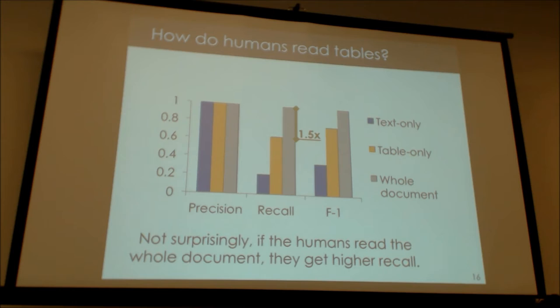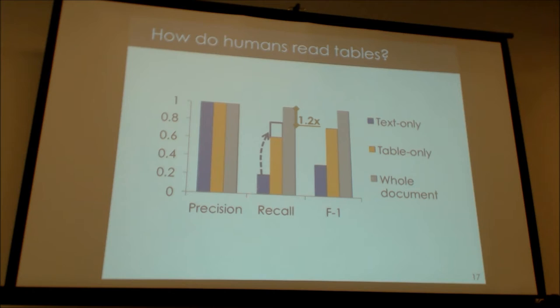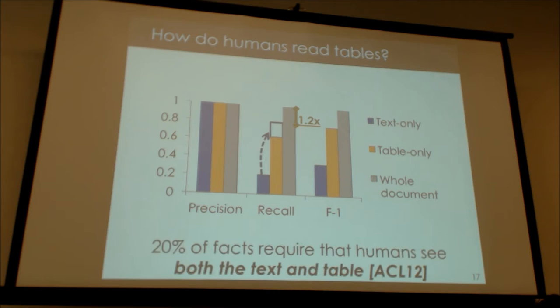The more interesting result was the recall — how many facts were they able to credibly extract and resolve precisely. Not surprisingly, text-only and table-only are lower than the whole document. What was surprising is that if you take the text and tables and stack them — assuming no commonalities between them — you're still 20% short of the full-document recall. That means humans need to reason jointly across text and tables about 20% of the time to get all the data. This is critical for macroscopic problems.